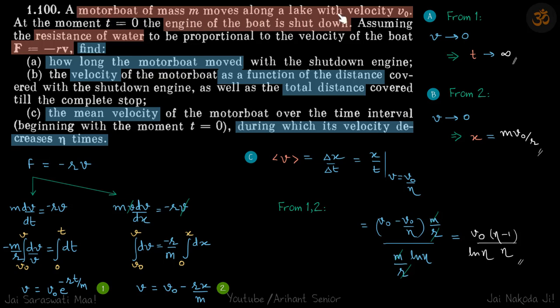A motorboat is moving with a constant velocity V0, and then the engine is shut down. It is given that the resistance of the water is proportional to the velocity itself. We need to find how long the motorboat moved until it stops.